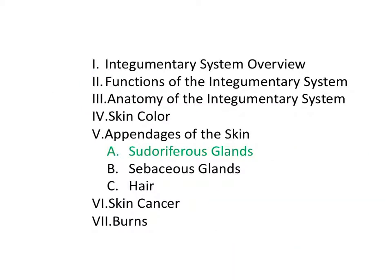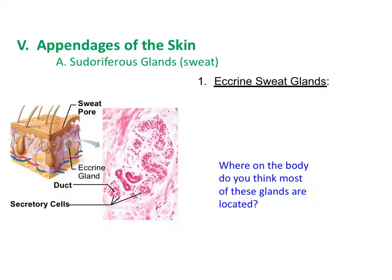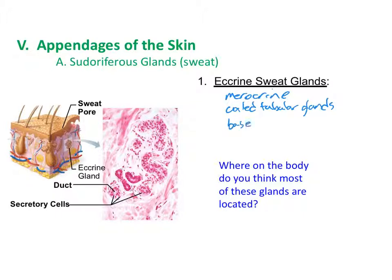Now we'll talk about appendages of the skin, including sudoriferous and sebaceous glands and hair. The first sweat glands are the eccrine glands, which are merocrine glands that secrete through exocytosis. These are coiled tubular glands found at the base of the dermis. Functionally, eccrine glands are involved in thermoregulation, producing sweat to prevent overheating.